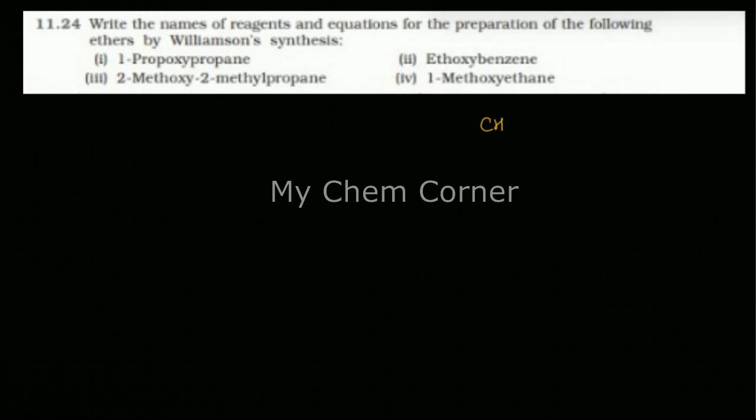The first one is 1-propoxypropane. So here propoxypropane is an ether linkage where we have propane chains on either side. So here we are going to have CH3-CH2-CH2-O-CH2-CH2-CH3. So this is going to be 1-propoxypropane.